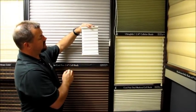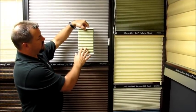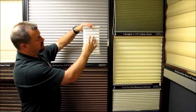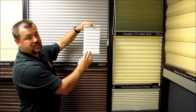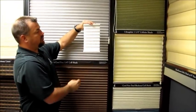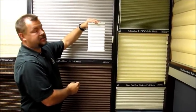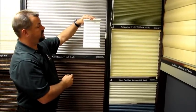The other thing that it does is it allows you to have multiple colors inside the house, and then it allows you to keep a uniform look on the outside. This is a great option for people that have HOAs that require them to have a white or off-white facing the street.